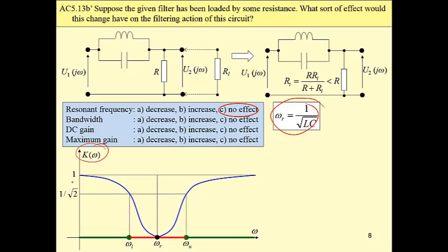And obviously from this amplitude response we can see that load resistance has no effect on both DC gain which is 1 and maximum gain which is 1 as well. And then we have no effect here.